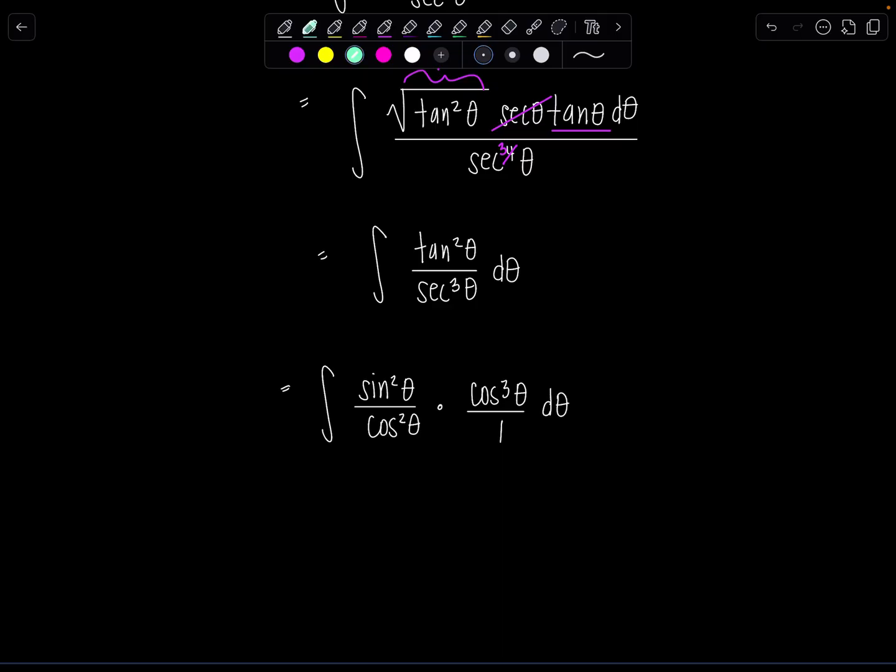Oh now we just have cancellation of our dreams and a beautiful integral emerge. Look at this. Integral sine squared theta cosine theta d theta and when you have powers of sines and cosines and you've got this little odd man out it's just screaming for a u sub. Hey guys do a u sub.